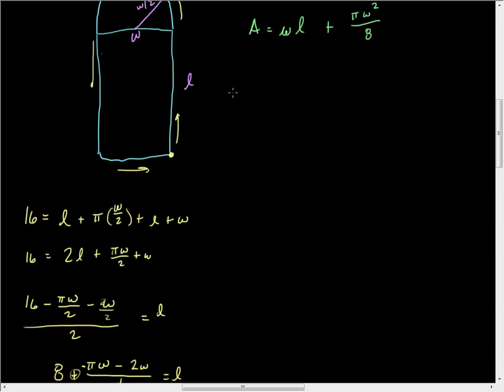So going back here, I have area equals, and now I'm just going to put that stuff in. I have W times my length, which is 8 plus negative πW minus 2W all over 4, plus πW² over 8. And now I want to go ahead and start working on cleaning that up. So A equals 8W plus negative πW² minus 2W² over 4 plus πW² over 8.